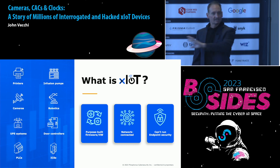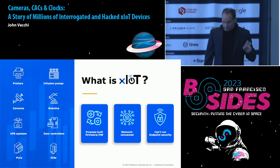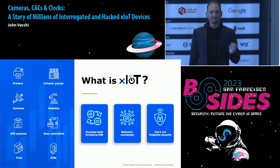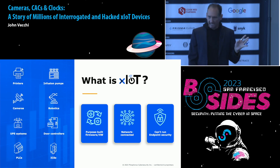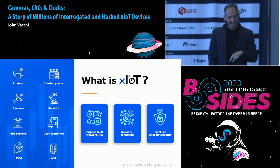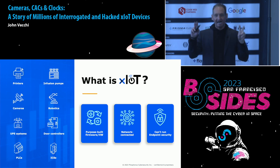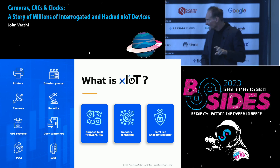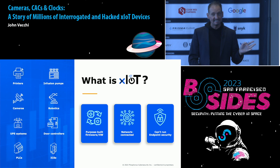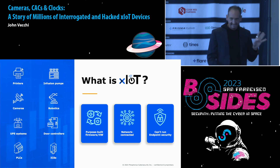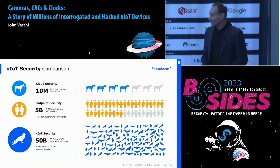There are similar things across all of these devices that are very common. They're all purpose-built — basically Linux servers running a flavor of Linux. It might be Android, BSD, BusyBox, VxWorks, a host of different operating systems, but they're all basically Linux-based. You can't put endpoint agents on these — you can't put Tanium or CrowdStrike on them. They're not traditional IT assets; they're very different. And they're all network-connected — they speak TCP/IP, they love to connect.